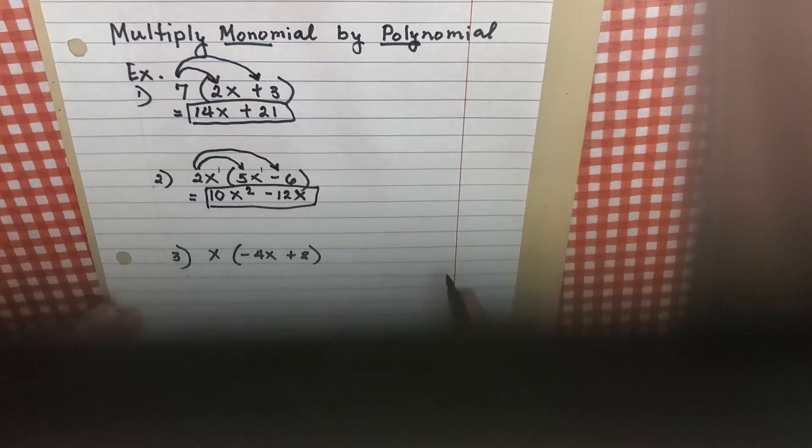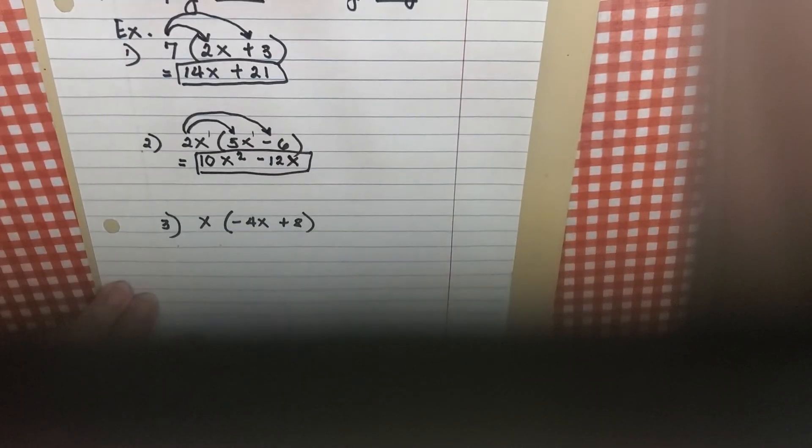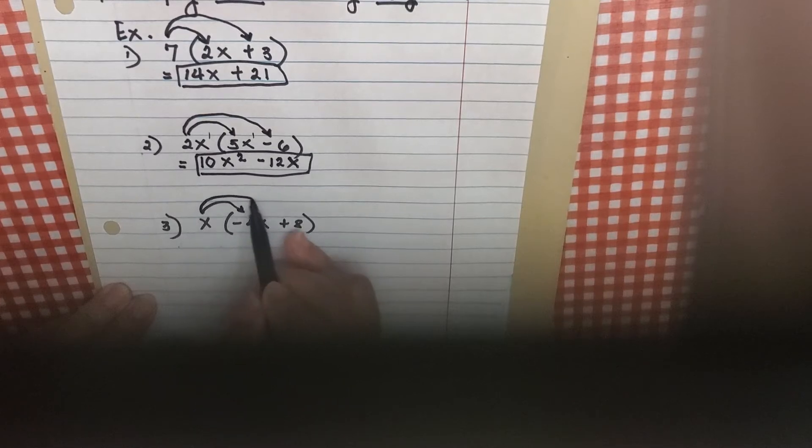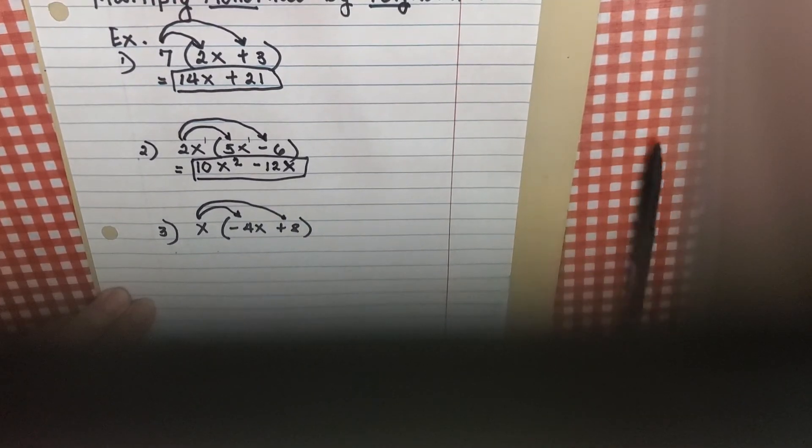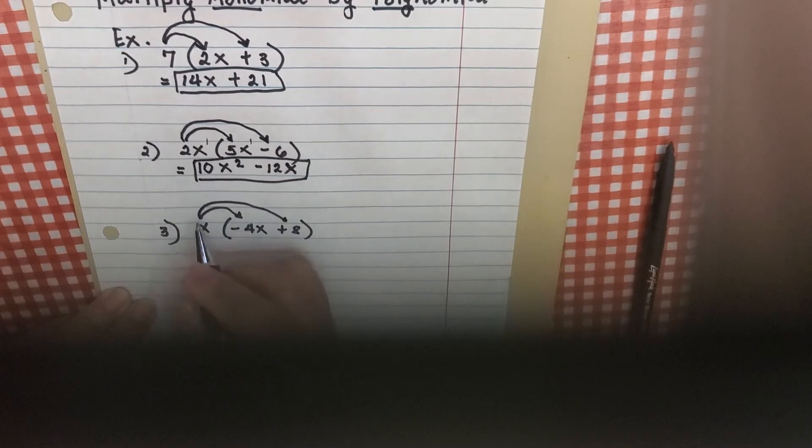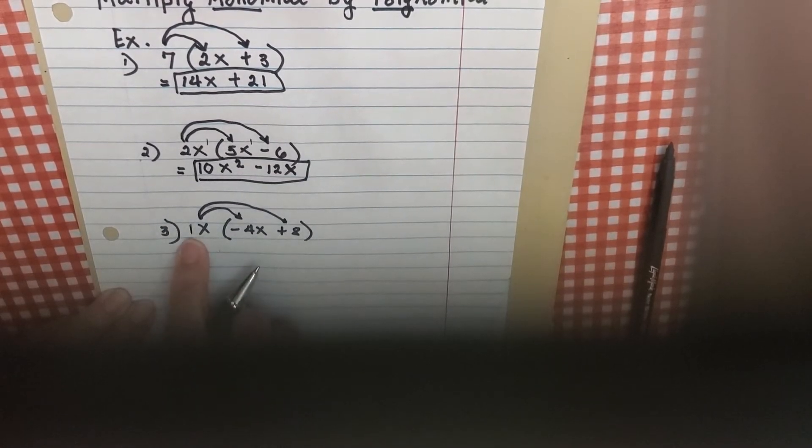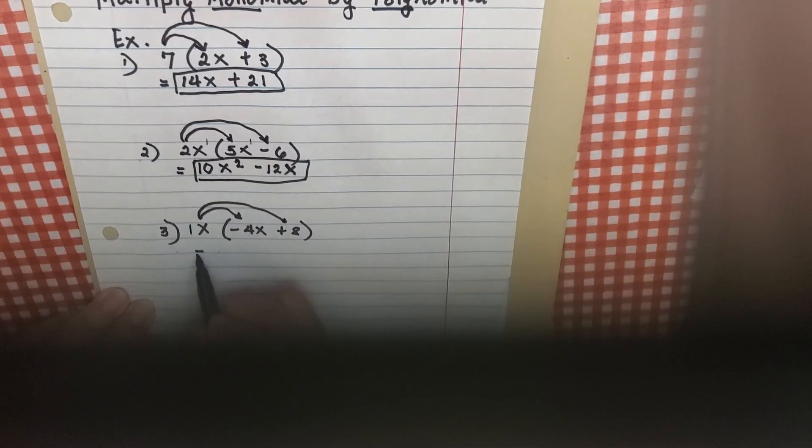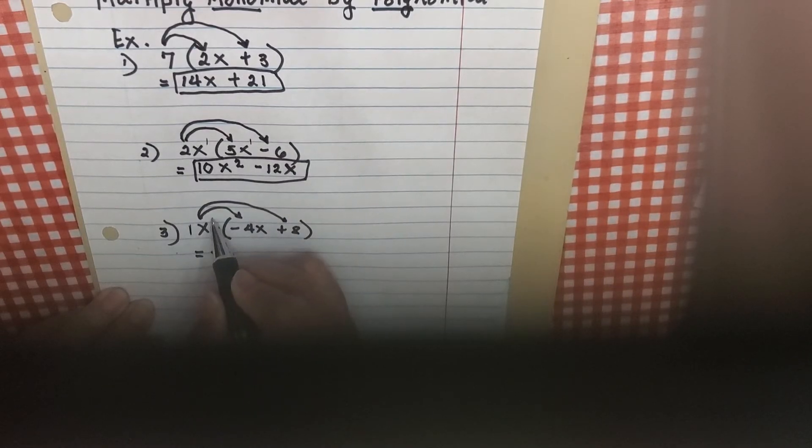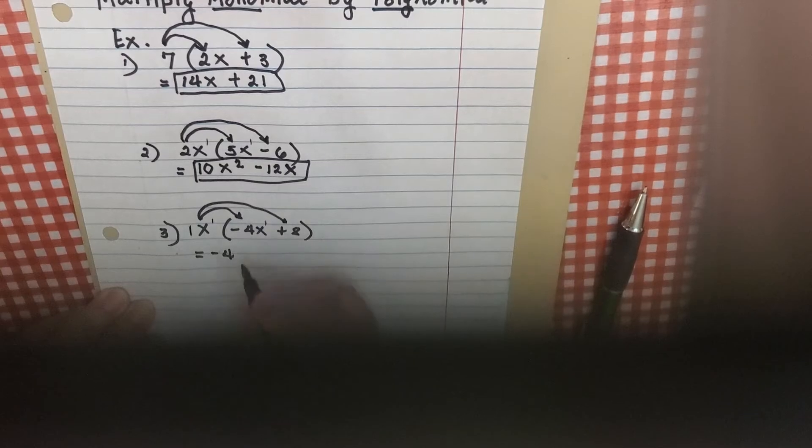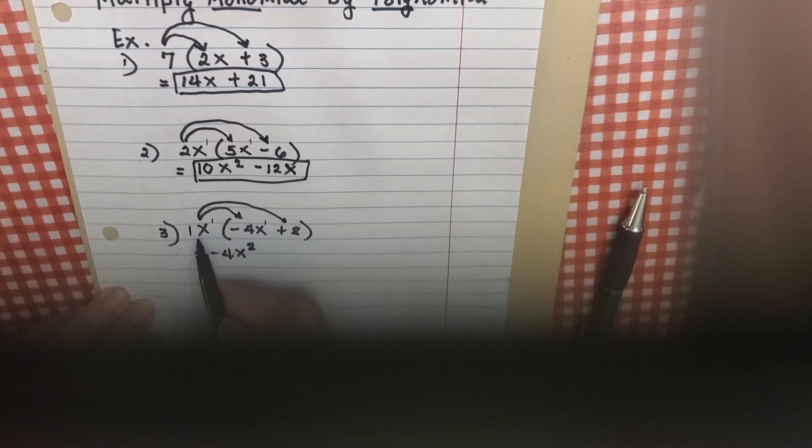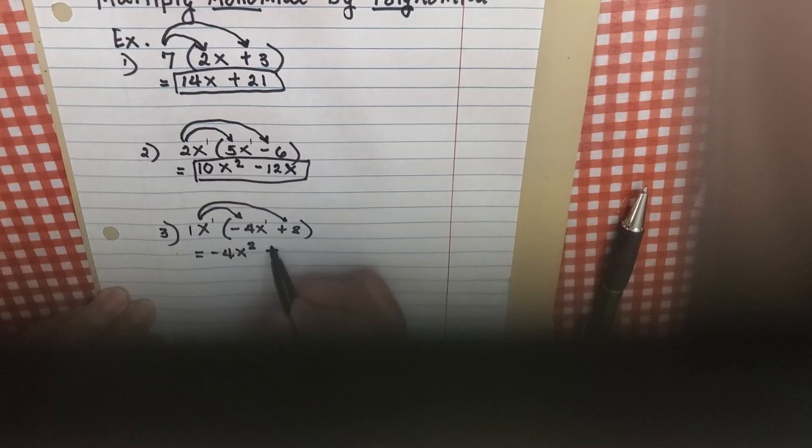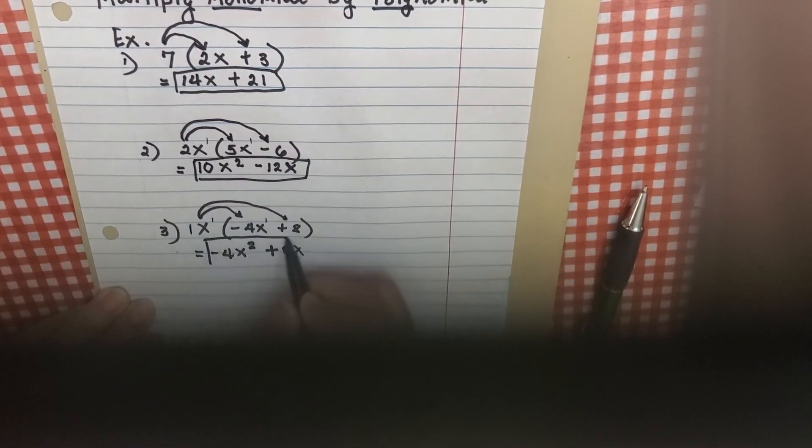Next, number 3. Distribute. I got negative 4x squared when I multiply x times x. There is an invisible 1 exponent there. You add the exponent, I got x squared. And then x times positive 8 is positive 8x.